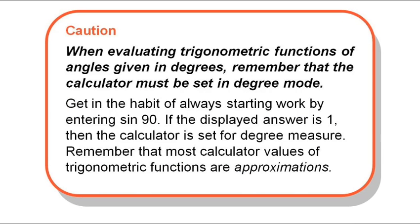Your calculator can work in either radian mode or degree mode — two different ways to measure angles. Most calculators have a degree indicator on the screen; look for a little indicator in the lower right corner that says DEG. If your calculator doesn't show that, punch in sine of 90 — we know sine of 90 degrees is 1, so if it gives you 1, you know you're set in the right mode.